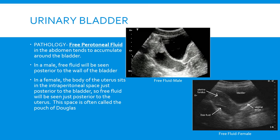When looking for free fluid around the bladder, we look for a dark area usually posterior to it. In a male patient you'll see the dark signal just posterior to the bladder wall, whereas in a female patient the uterus sits just posterior to the bladder, so fluid will accumulate posterior to the uterus in the pouch of Douglas, which you can see in the bottom picture.